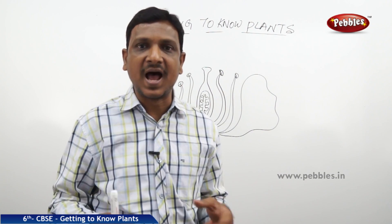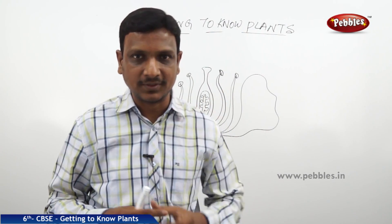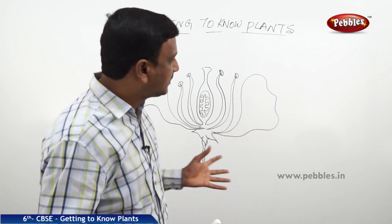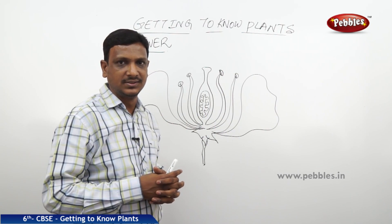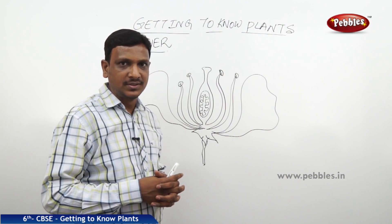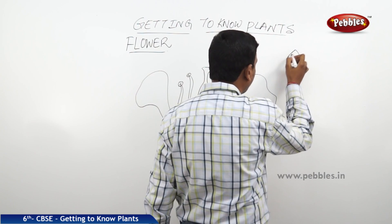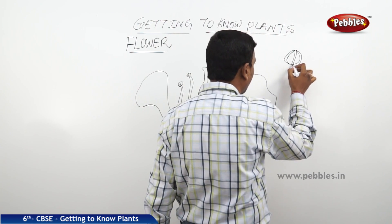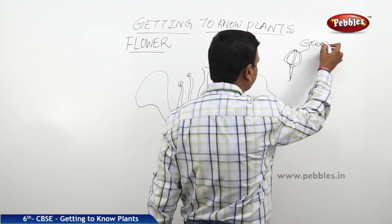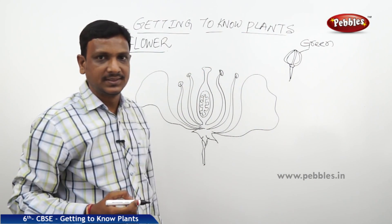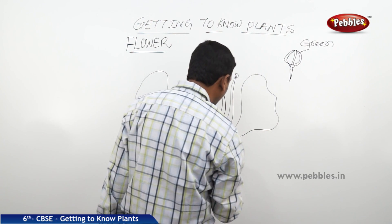After that I will tell you the answers to those questions. Flowers, even though they appear in different colors, have some similar structures. So when the flower is in the form of a bud, it is covered by some green color leaves. When the flower is like a bud, on the surface there are some green color structures which are called sepals.